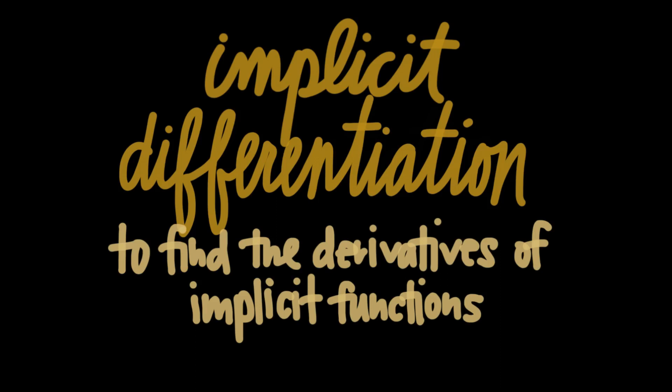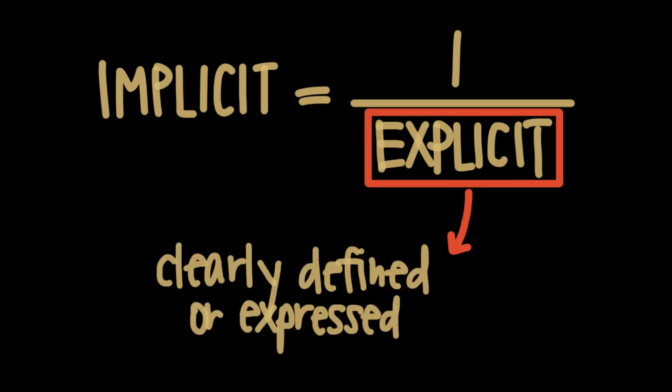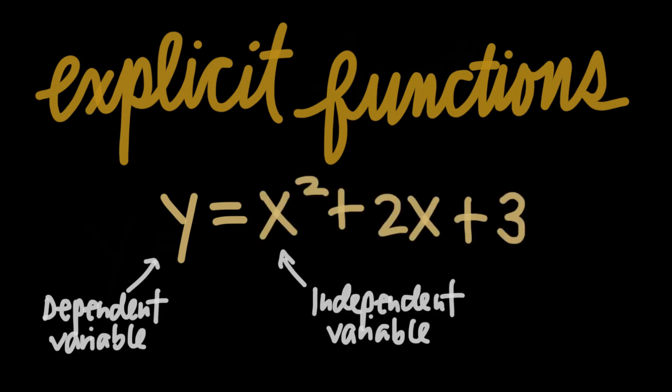Now you're probably wondering what it even means for a function to be called implicit. Well, the word implicit is the opposite of explicit, and the word explicit basically means clearly defined or expressed. So explicit functions are the ones you've already seen a lot of in your calculus class. They look like this: a dependent variable, in most cases we call this y, expressed as the function of an independent variable, usually x.